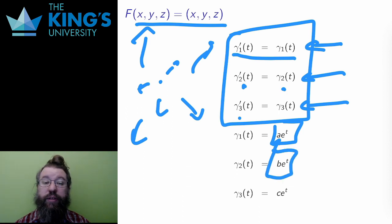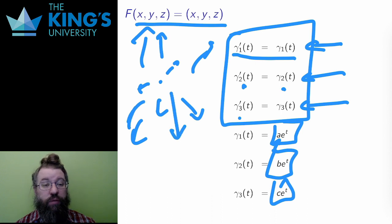Therefore, the solutions are γ₁ is ae^t, γ₂ is be^t, and γ₃ is ce^t, for some constants a, b, and c. And this explains why the outward growth is exponential. The differential equation implied by the field is solved by exponential growth.